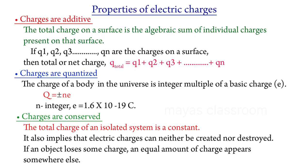The equation for quantization is important: Q is equal to plus or minus n times e, where n is equal to 0, 1, 2, 3, etc. The next property is the conservation of charge. The total charge of an isolated system is always conserved — charge is neither created nor destroyed, but can be transferred. The total charge of an isolated system remains constant.